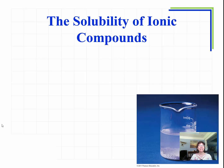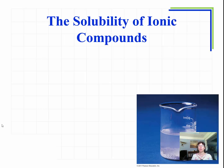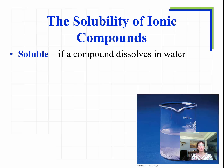Now that we have learned how to balance chemical equations, and we know that these chemical equations are a representation of chemical reactions that take place, we are ready to start looking at different types of chemical reactions. We're starting a series of different types. The first one will be called a precipitation reaction, but we cannot look at the reaction until we first examine how to determine if an ionic compound is soluble or not. This is what drives precipitation reactions, so what do we mean by soluble?